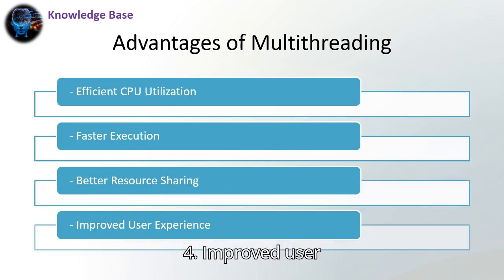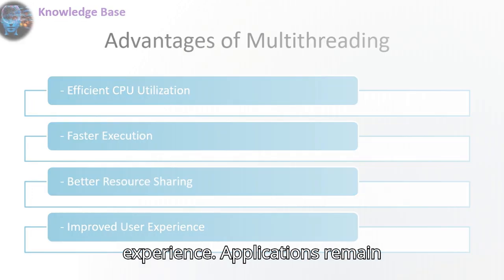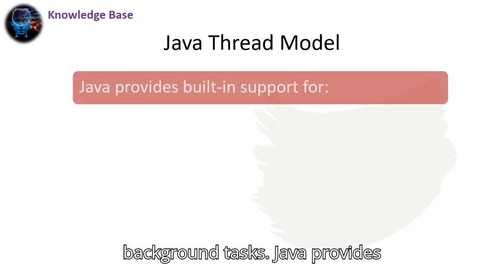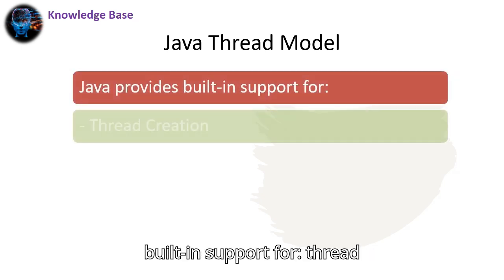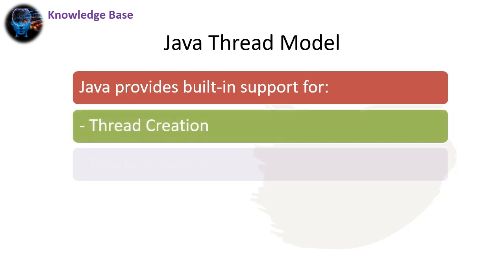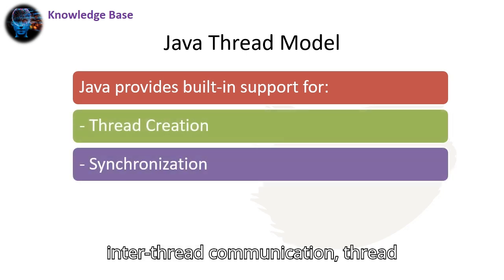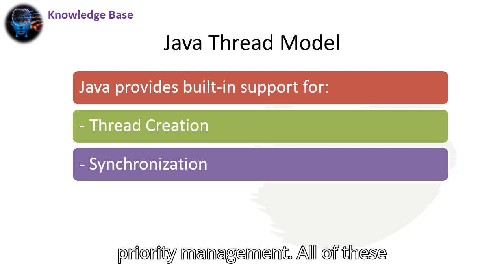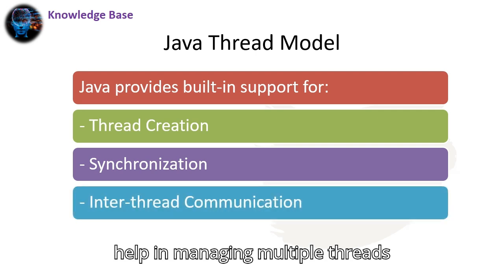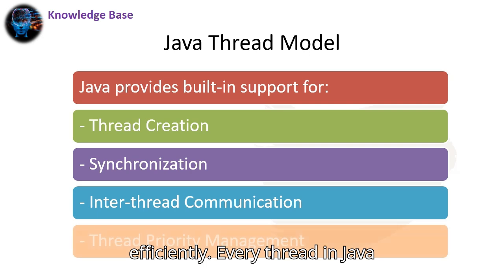4. Improved user experience: applications remain responsive even when performing background tasks. 5. Java provides built-in support for thread creation. 6. Synchronization. 7. Inter-thread communication. And thread priority management. All of these help in managing multiple threads efficiently.